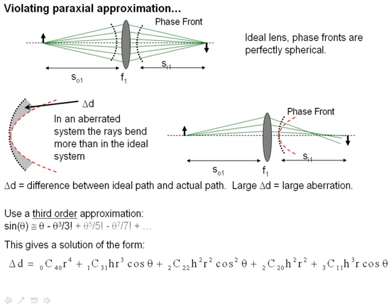Last time we looked at some of the issues that happened when you violated the paraxial approximation. With an ideal lens, of course, you get perfectly spherical phase fronts that look like these dashed black lines, but in an aberrated system, one that doesn't fully follow the paraxial approximation, we've learned that rays bend more than an ideal system.